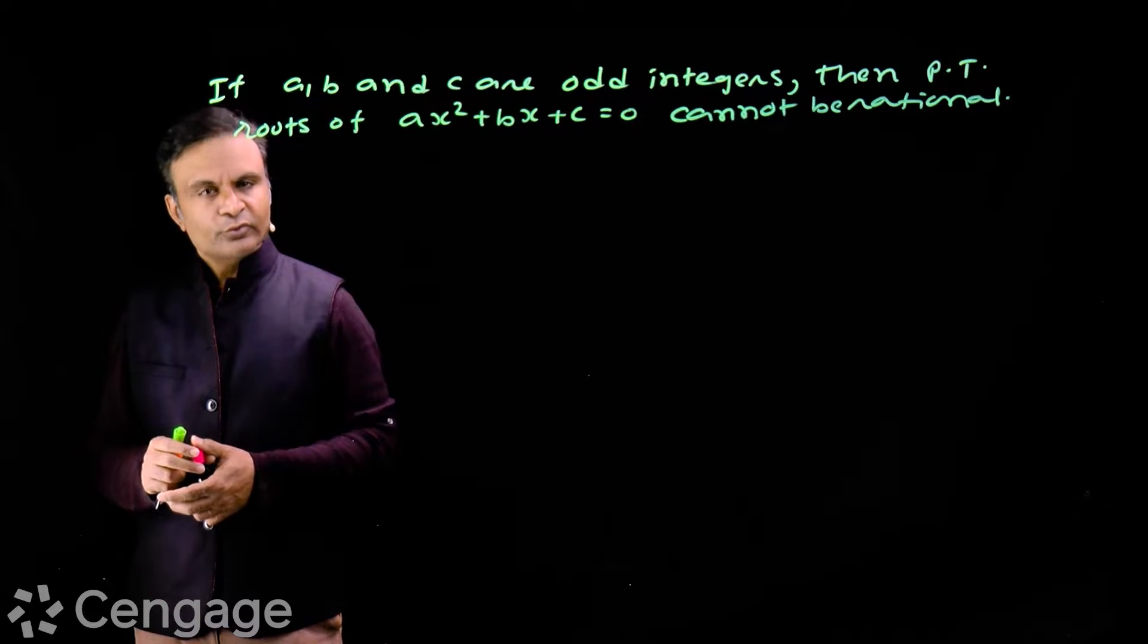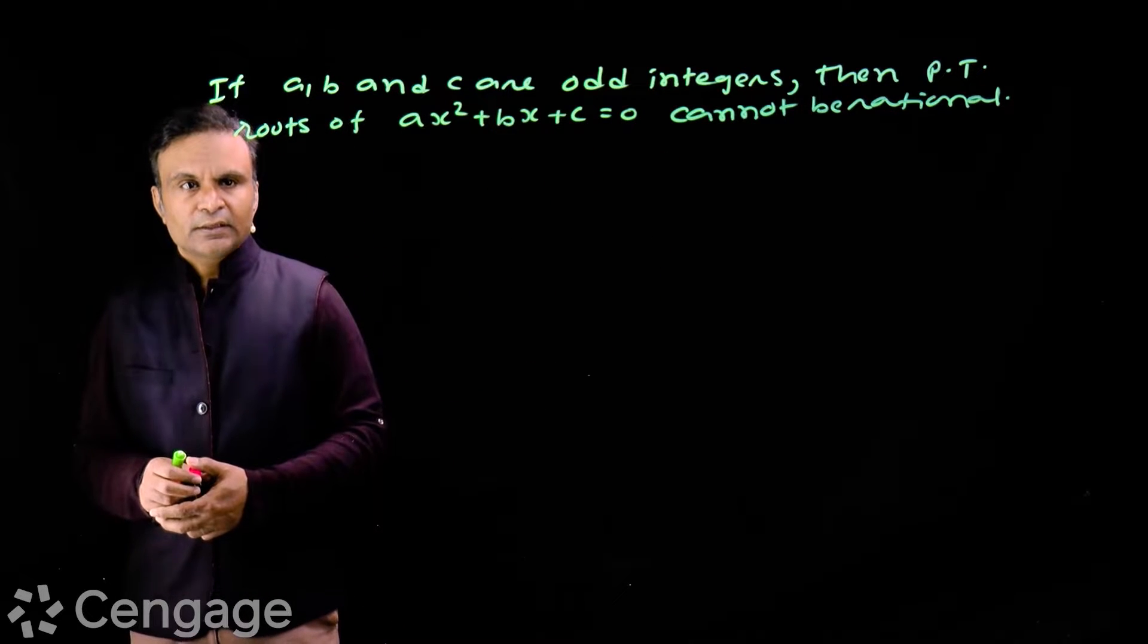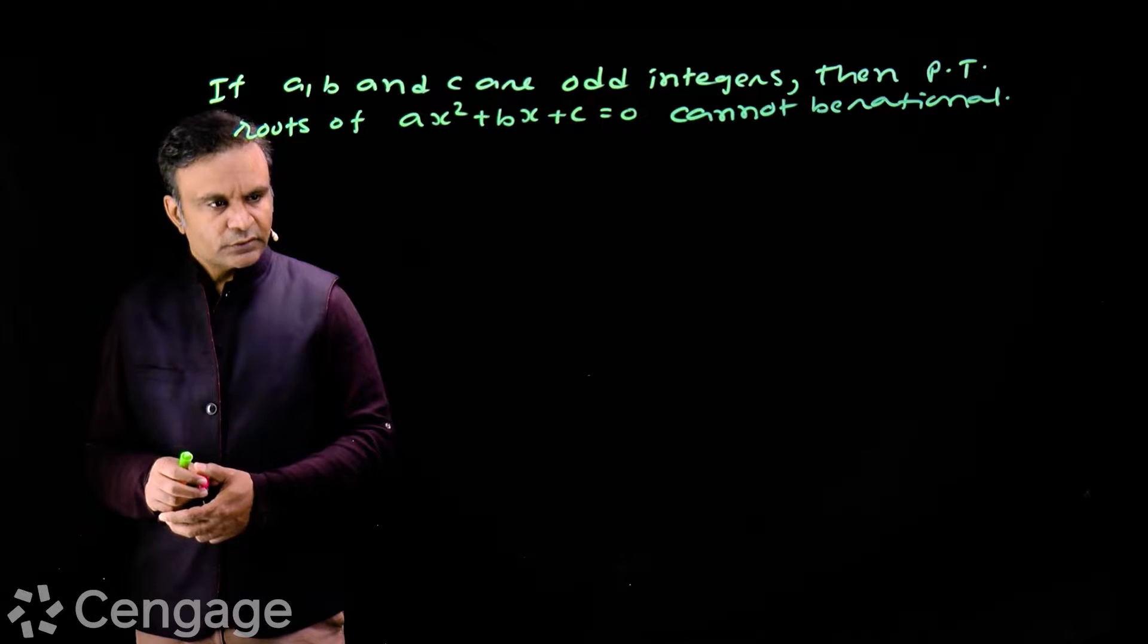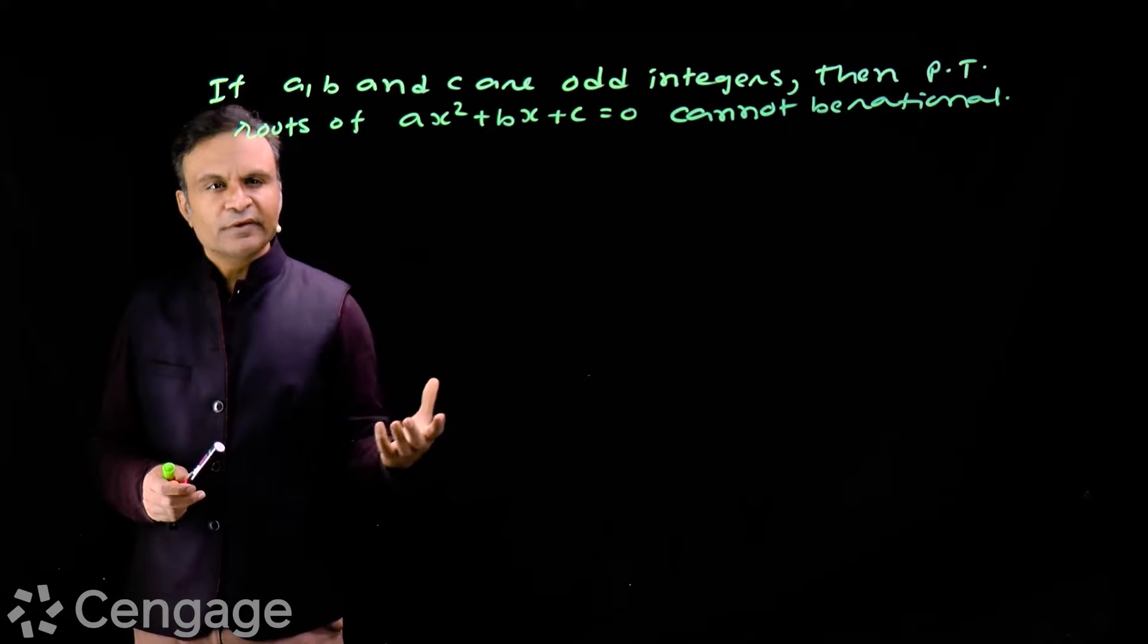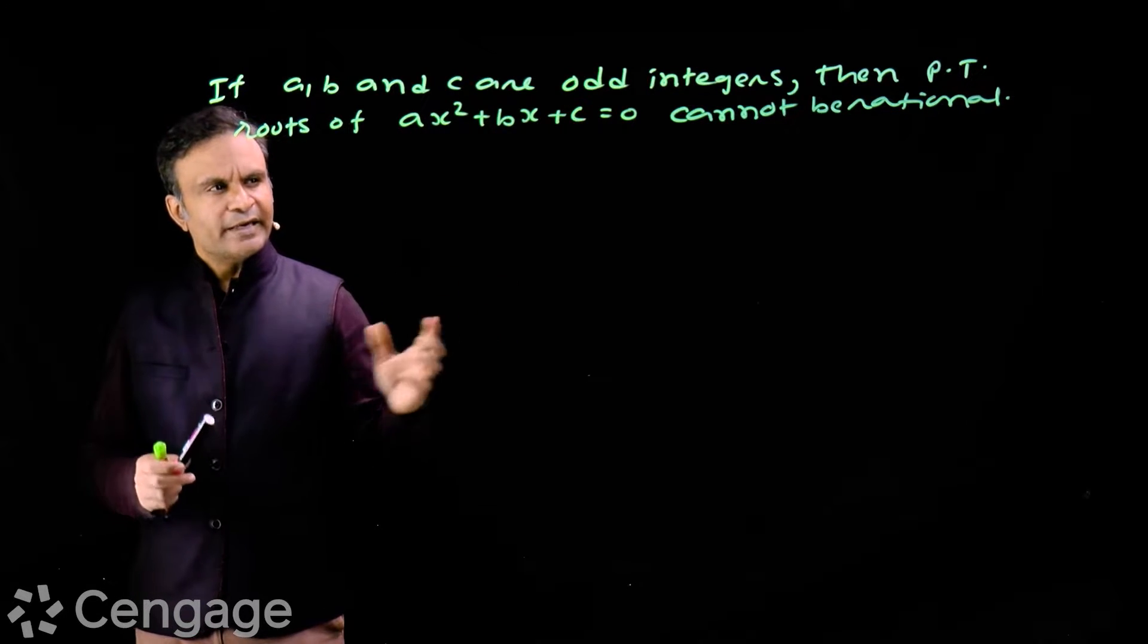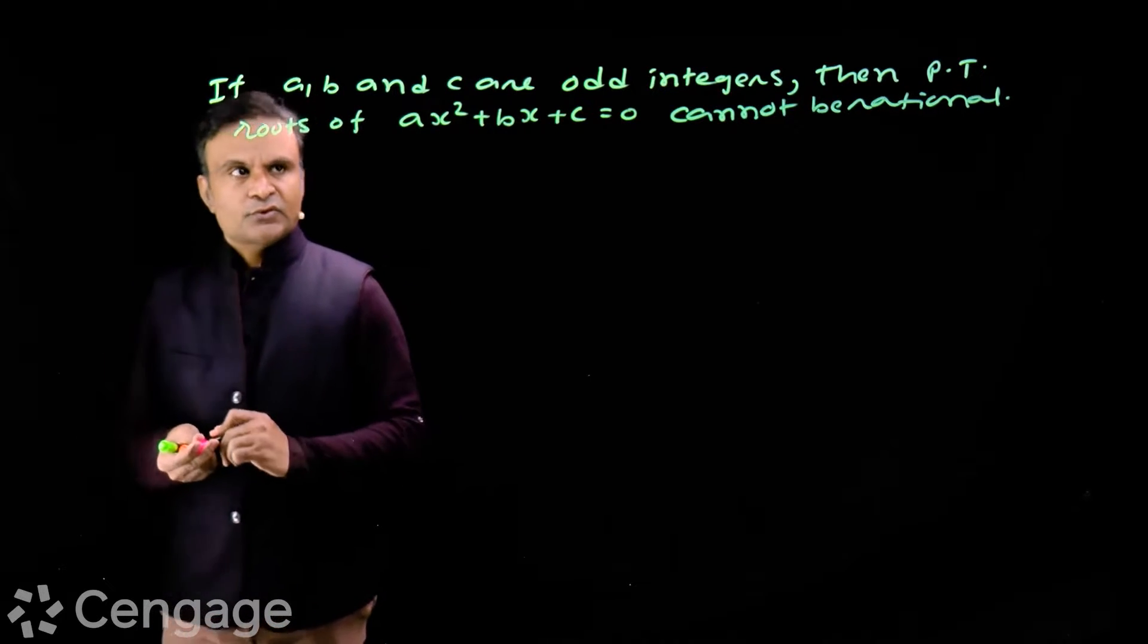We have to prove that the discriminant is not a perfect square of some integer. So here we will prove this using method of contradiction. We will assume that discriminant is a perfect square and then we will find some contradictory statement.